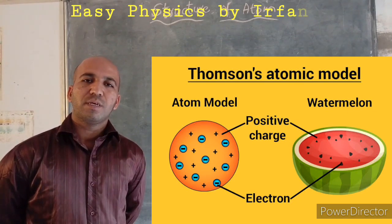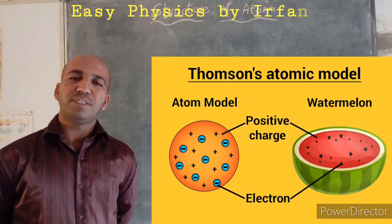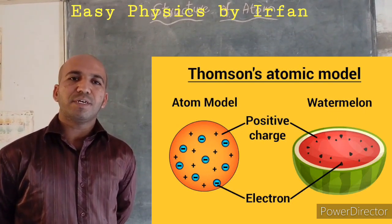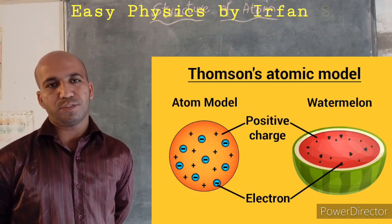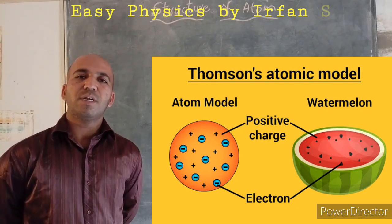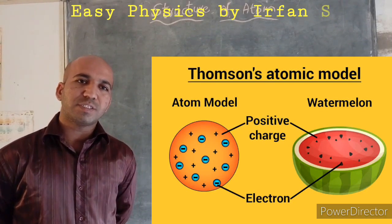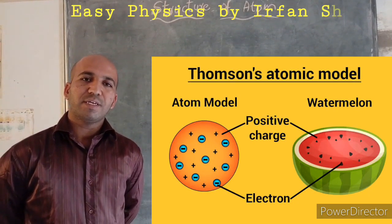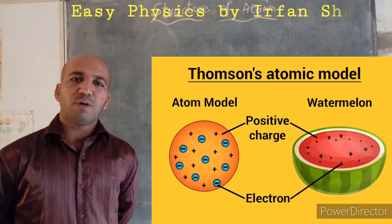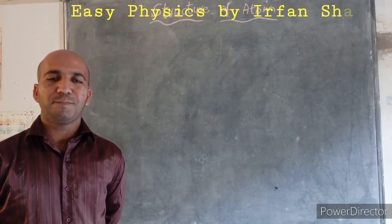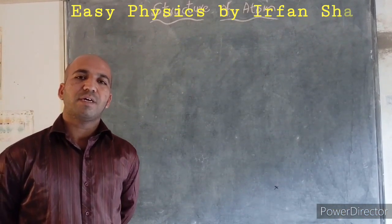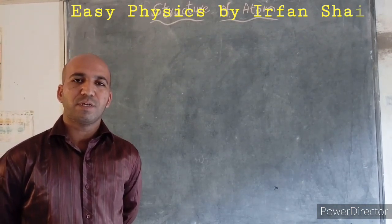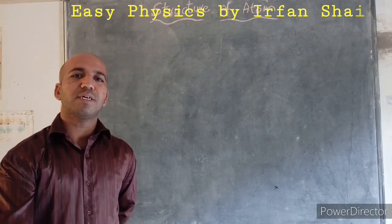But actually, he told that the negatively charged electrons are embedded in between the positive charge. But there are some defects in Thomson's atomic model. To rectify these defects of Thomson's atomic model, another atomic model is given by Ernest Rutherford in 1911.